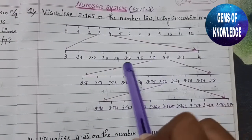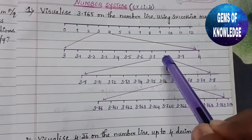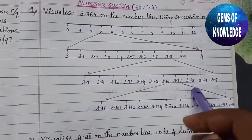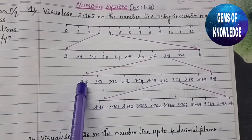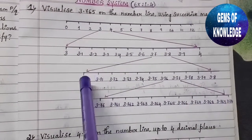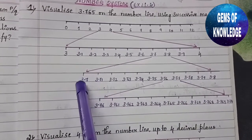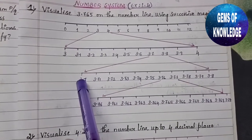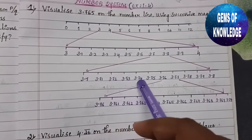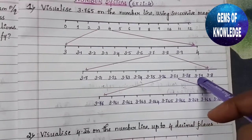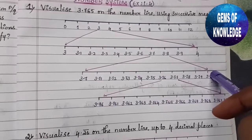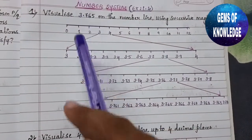We enlarge the part between 3.7 and 3.8. After enlarging, we can see 3.7 on one side and 3.8 on the other. In between there are many numbers: 3.70, 3.71, 3.72, 3.73, 3.74, 3.75, 3.76, 3.77, 3.78, 3.79, and then 3.80. Now we need 3.76, so we take 3.76 and the next number 3.77.